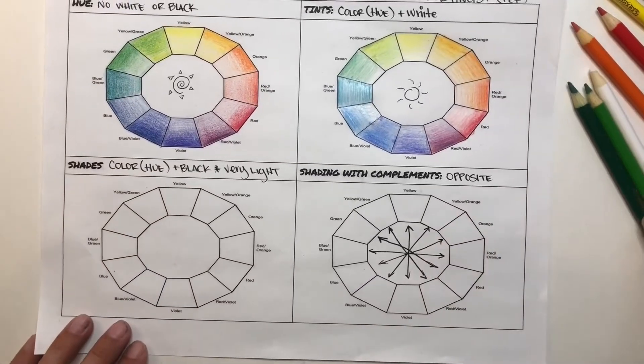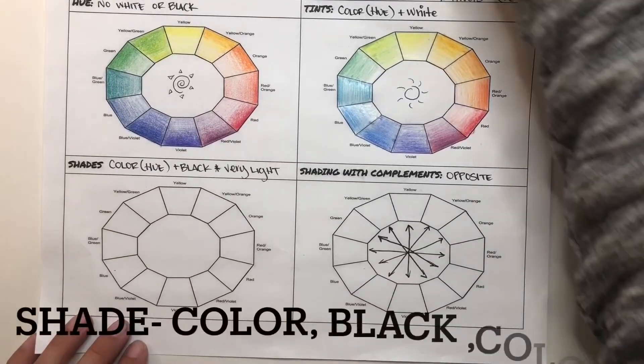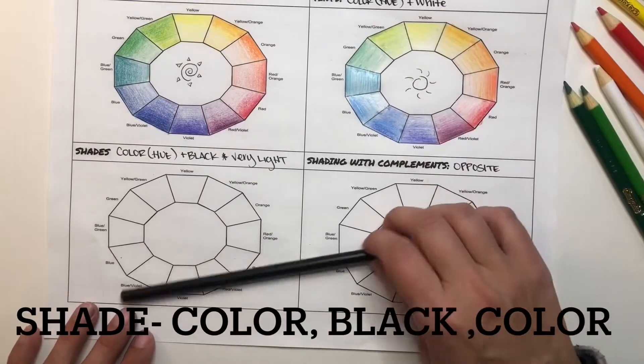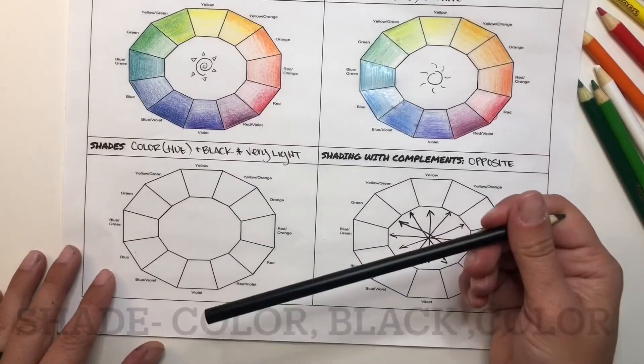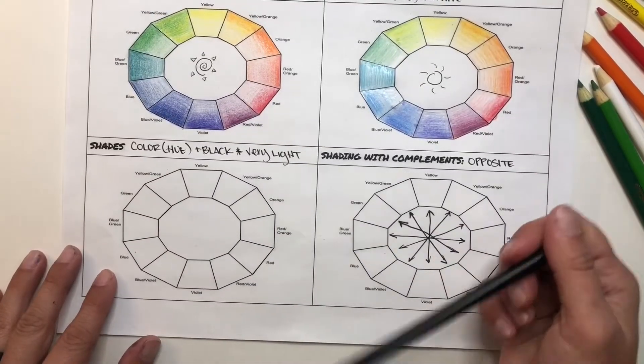Your shade color wheel is going to be color and then a small layer of black. We want to make sure that we're darkening a color, we're not taking it away.